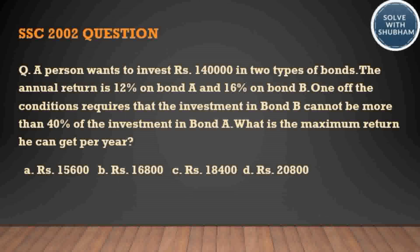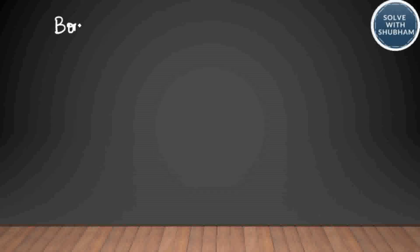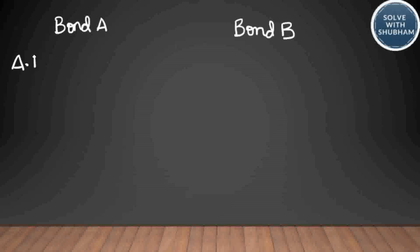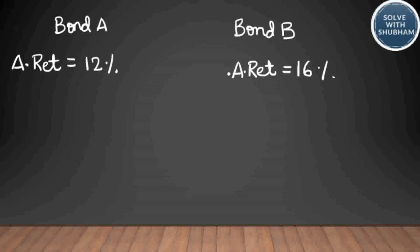Total investment is one lakh forty thousand. Bond A has an annual return of 12 percent and bond B has 16 percent. If we invest rupees x in bond A, the investment in bond B would become one lakh forty thousand minus x.